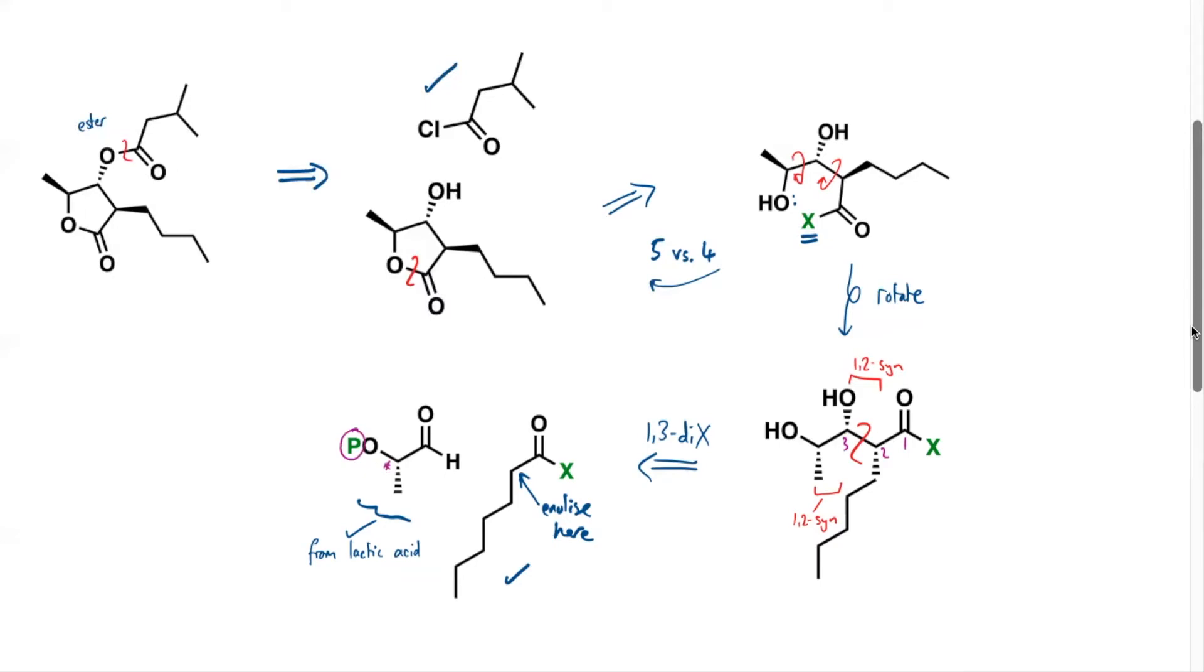And the reason why we might be thinking about that is that this looks like a good aldehyde for applying the Felkin-Ahn model to. So we just have a quick check. We've got a hydrogen in the middle, that's a small group. The methyl will be a medium type group, and this group can act as the R large, and we know it's going to act as the R large because it's got an electronegative atom, so it'll sit in the perpendicular conformation to make the most reactive conformer of that aldehyde. So under kinetic control this should be dominant.